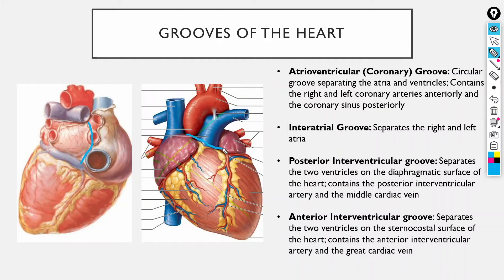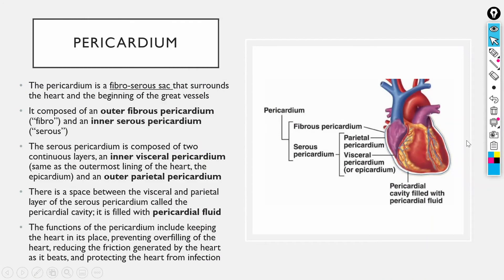We also have the interatrial groove, which lies between the atria. The posterior interventricular groove is on the back side between the two ventricles and contains the posterior interventricular artery and the middle cardiac vein. The anterior interventricular groove is on the front side between the right two-thirds and left one-third of the ventricles; it contains the anterior interventricular artery — also called the left anterior descending artery — and the great cardiac vein.